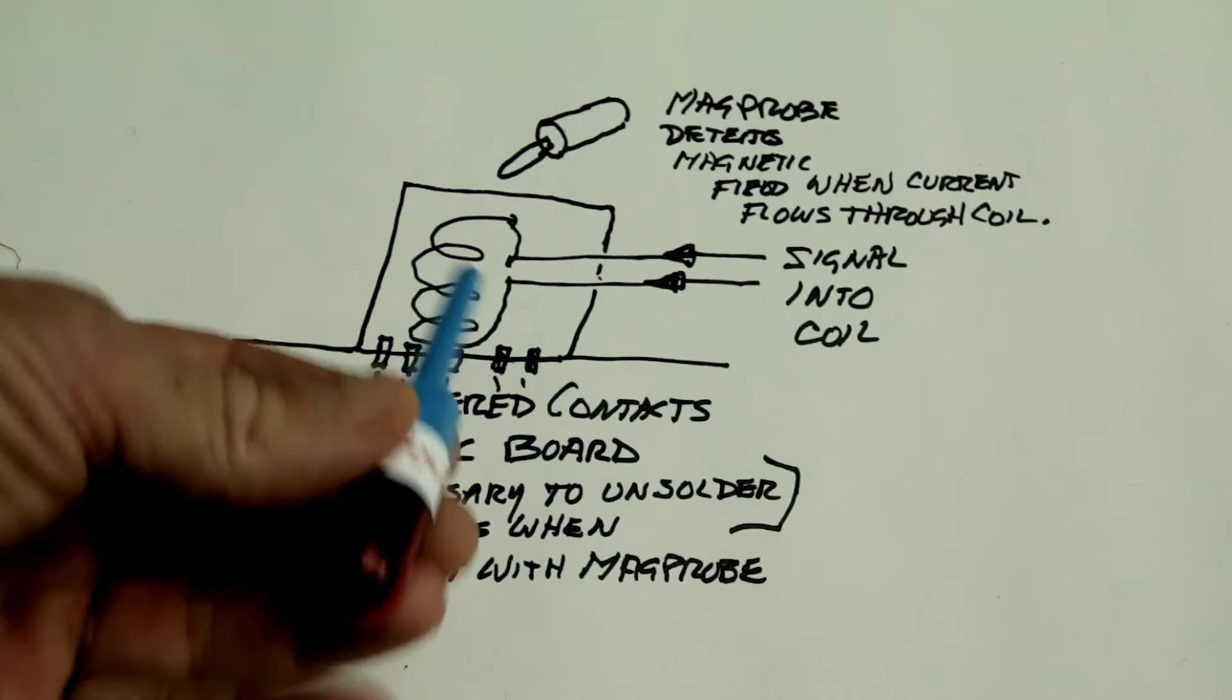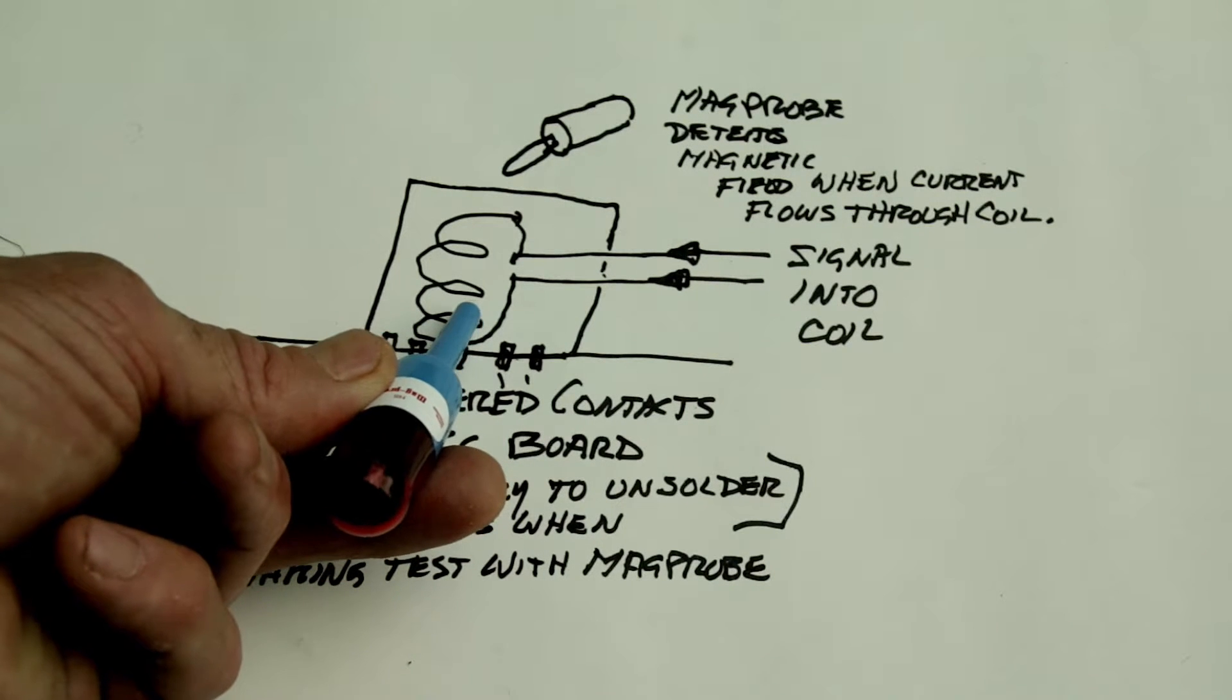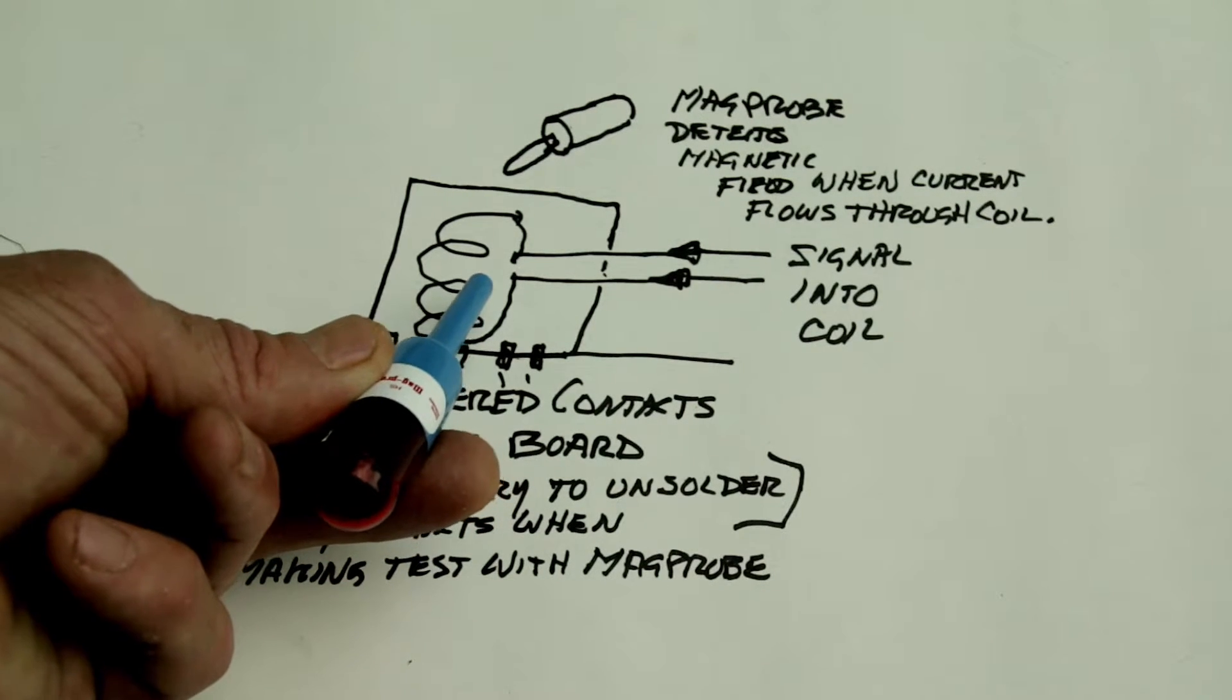If you hold the mag probe up to this coil while the relay is supposed to be energized and there's nothing, that means there's something wrong here. You've got an electrical problem.